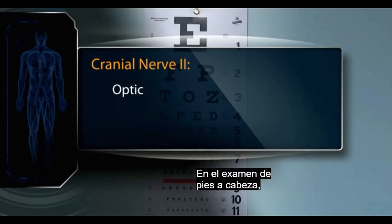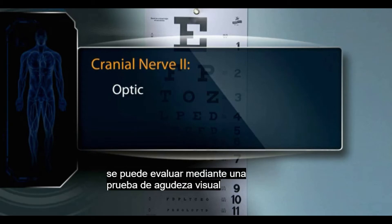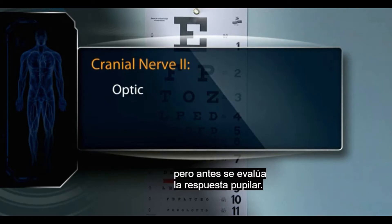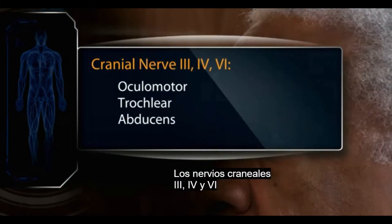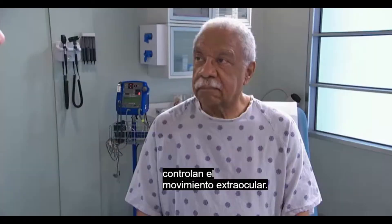In the head-to-toe assessment, cranial nerve 2, the optic nerve, can be assessed with a test for visual acuity by using a Snellen eye chart. Pupillary response was tested earlier. Cranial nerves 3, 4, and 6 control extraocular movement.